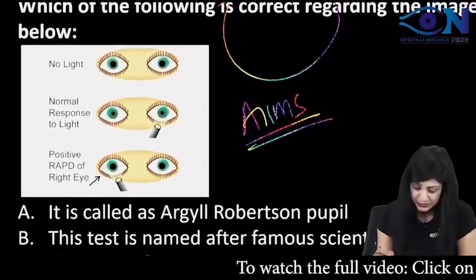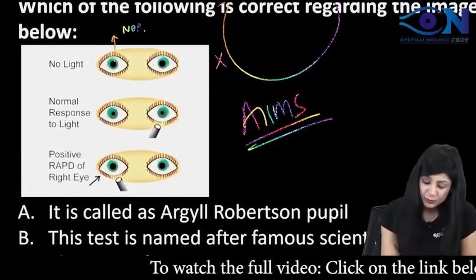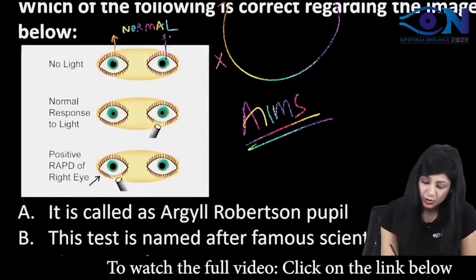Okay, you can see here in the first there is no light. This is the normal size of the pupils, both are normal.